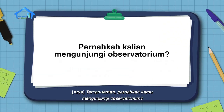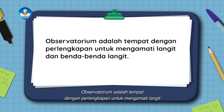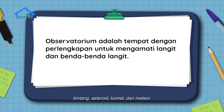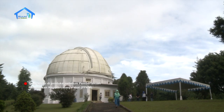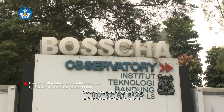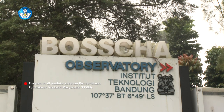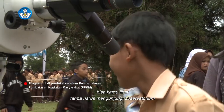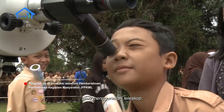Teman-teman, pernahkah kamu mengunjungi observatorium? Observatorium adalah tempat dengan perlengkapan untuk mengamati langit dan benda-benda langit seperti planet, bintang, asteroid, komet, dan meteor. Observatorium yang terkenal di Indonesia adalah Boscha di Lembang, Bandung, Jawa Barat. Benda langit seperti bintang bisa kamu lihat tanpa harus mengunjungi observatorium atau menggunakan teleskop.